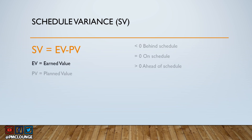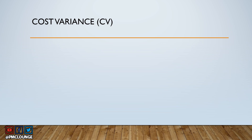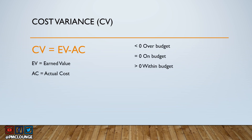Schedule Variance, or SV: SV equals EV minus PV. If SV is less than zero, you are behind schedule. If it is greater than zero, you are ahead of schedule. If it equals zero, you are on schedule. Cost Variance, or CV: CV equals EV minus AC. If CV is less than zero, you are over budget. If greater than zero, you are within budget — favorable. If equal to zero, you are on budget.